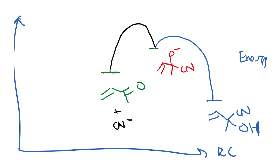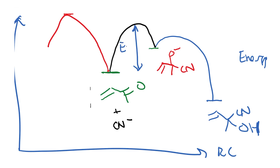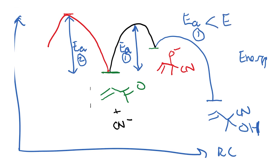This is basic kinetics: a slow reaction means the barrier would be higher and a fast reaction means the barrier would be lower. We are comparing the same molecule reacting with cyanide, so all the reactants are identical. The only difference is the products formed. It is obvious that Ea1 is lower than Ea2.